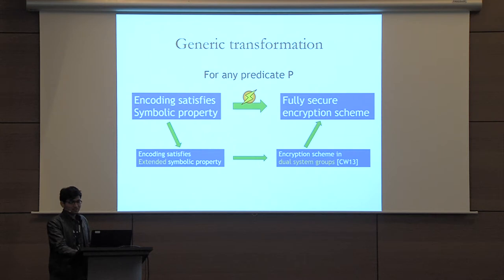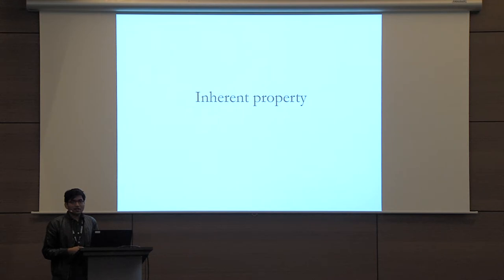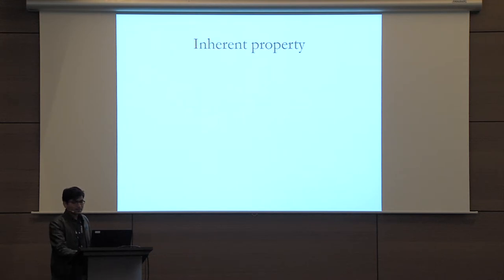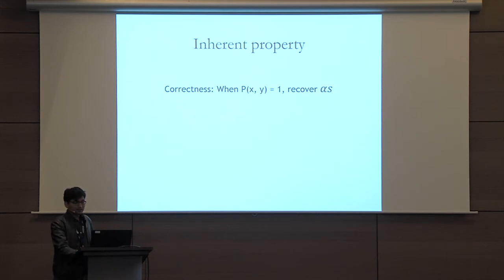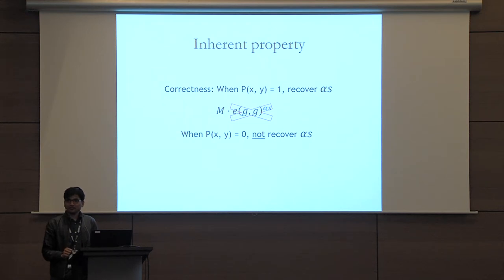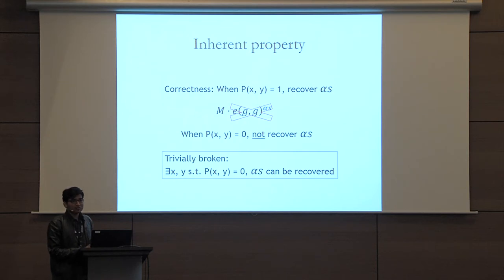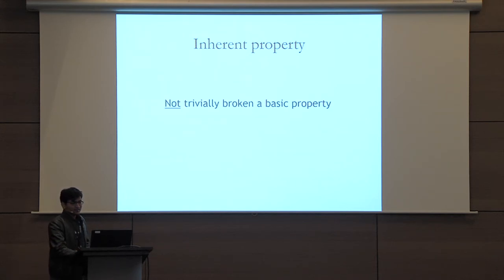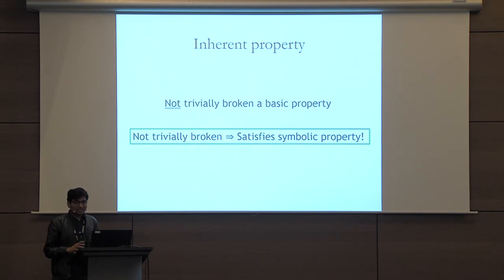In the next part of the talk, I'll discuss in some detail why this property is inherent to the notion of encodings. Recall that for correctness, we require that if the predicate is true, then it should be possible to recover alpha times s. When the predicate is false, at the least we want that it should not be possible to recover alpha·s. So it makes sense to define an encoding scheme to be trivially broken if there exists some x and y such that the predicate is false but alpha·s can still be recovered. Not being trivially broken is a very basic property. Turns out it is sufficient too — if a scheme is not trivially broken, it satisfies the symbolic property.